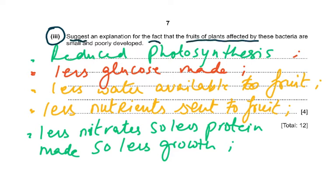Part 3: suggest why the fruits of plants affected by these bacteria are small and poorly developed. If the leaves have lost chlorophyll, there is less photosynthesis and less glucose made. If the xylem is blocked, less water is available to the fruit. Less nutrients (nitrates, phosphate, sulfate) reach the fruit, meaning less protein synthesis and less growth.